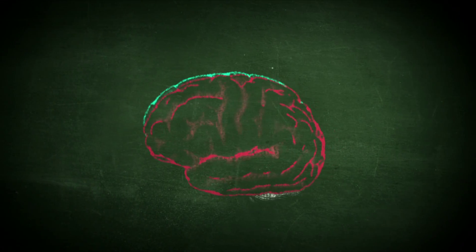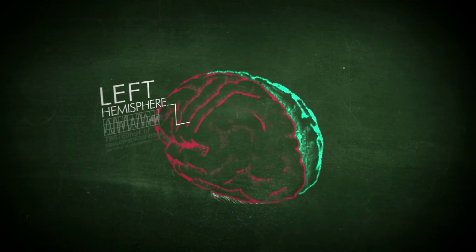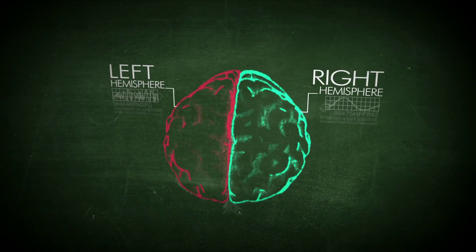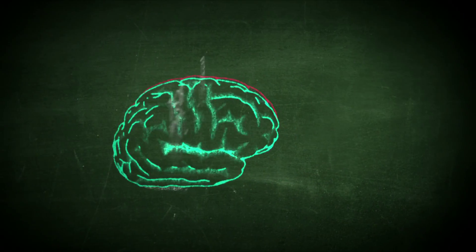Divided into two hemispheres, the left and the right. Each side processes reality in a different way. The left side thinks in words and the right hemisphere thinks in images.